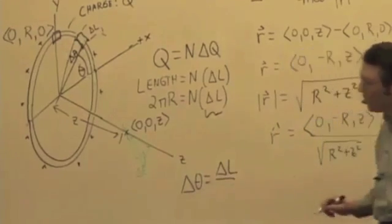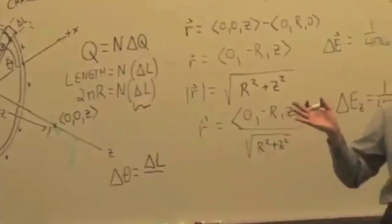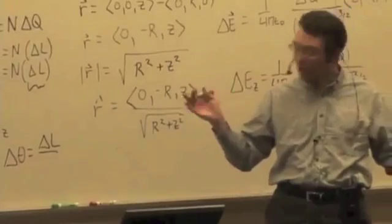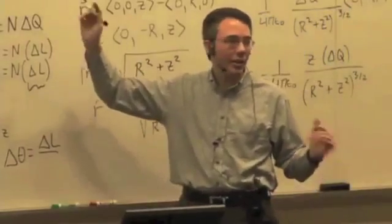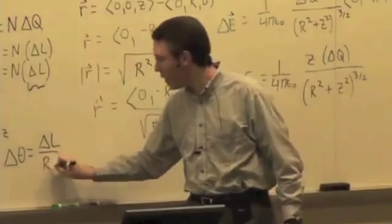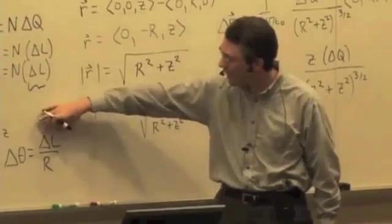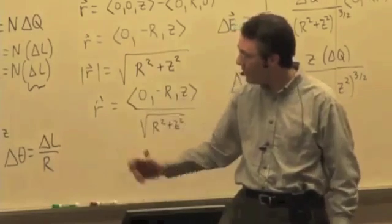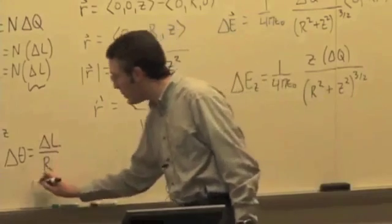Delta theta is equal to delta L over, not 2 pi, but just the radius r. That's what a radian is. It's that little length divided by the radius. So delta L would be r times delta theta.